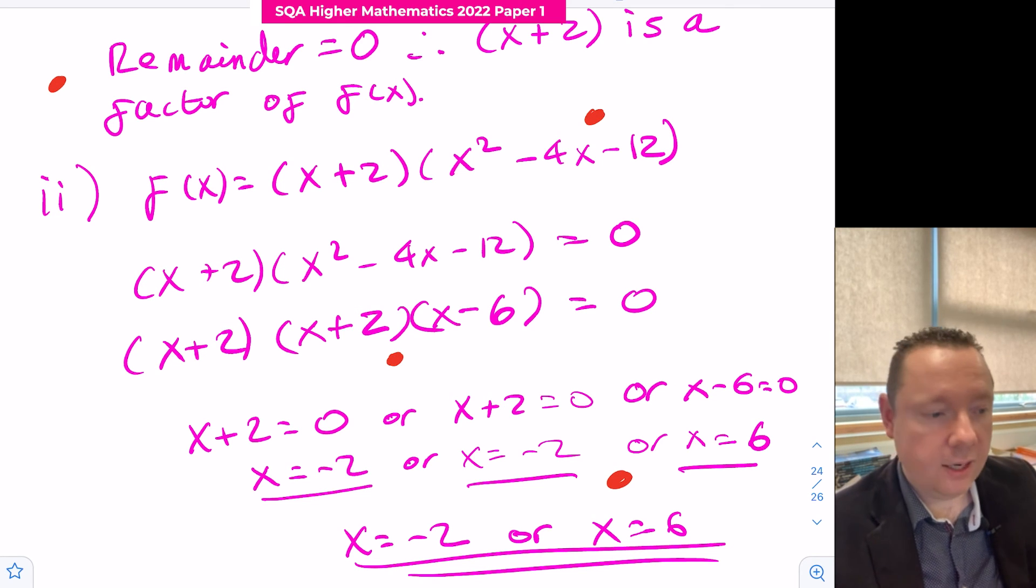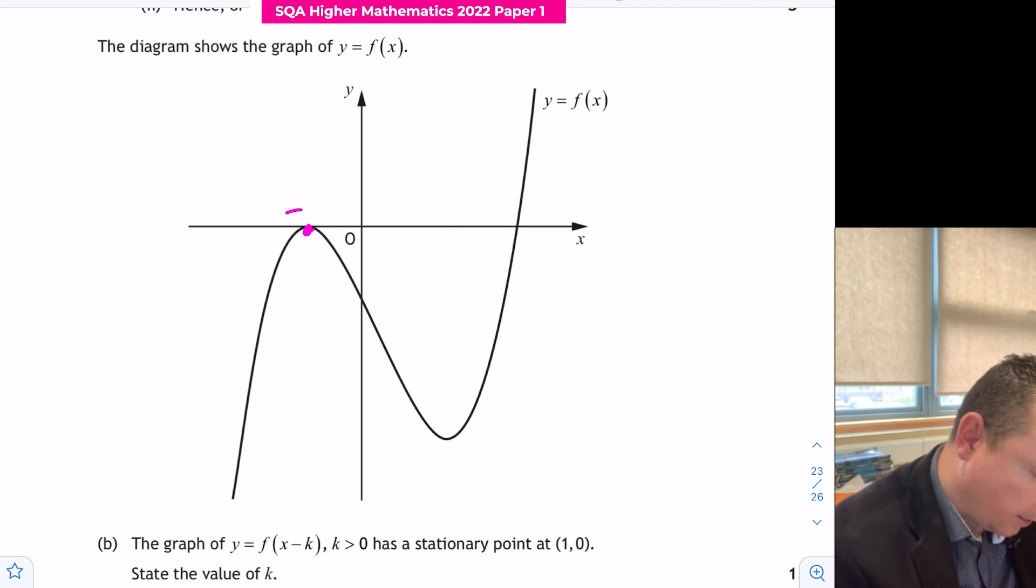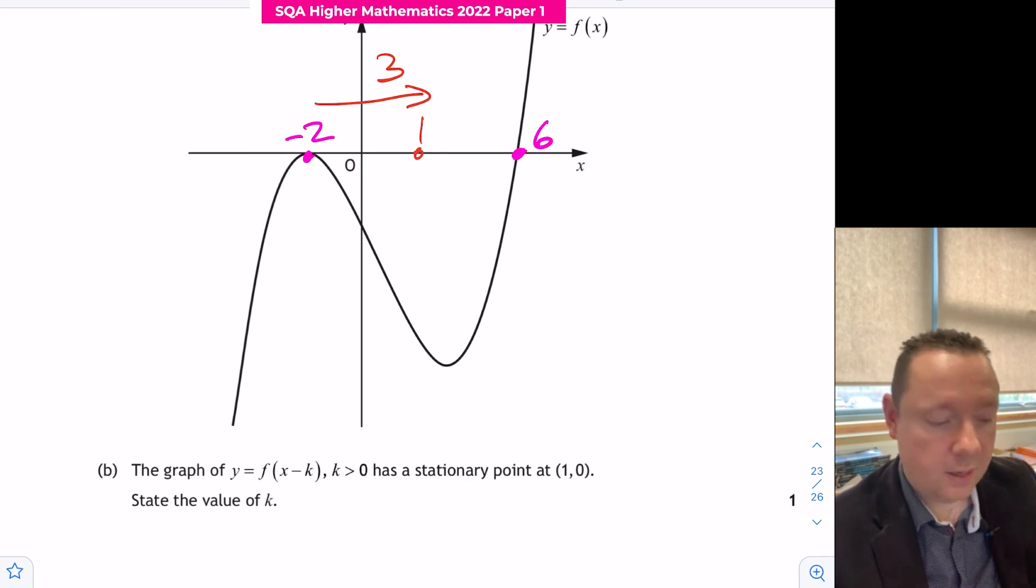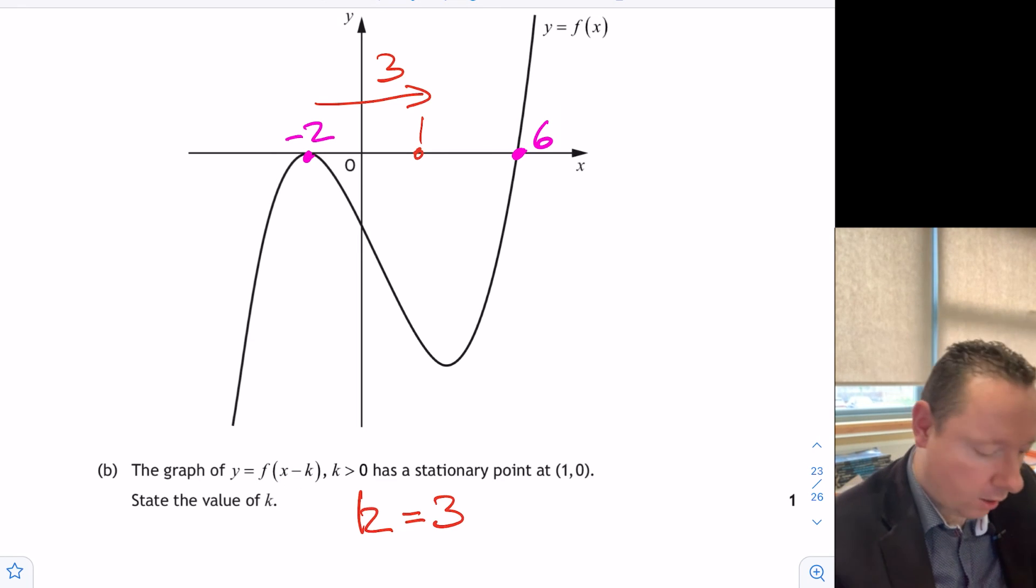The graph of f of x minus k has a stationary point at (1, 0). State the value of k. We know that this must be minus 2 because it's crossing the axis there, and this must be 6. If this has a stationary point at (1, 0), that means it must have shifted along to the number one. It's shifted to the right by 3. Therefore, since it's shifted to the right by 3, k equals 3 because it's x minus k, so it's x minus 3. We get a mark for working that out. There's our final mark for this question.